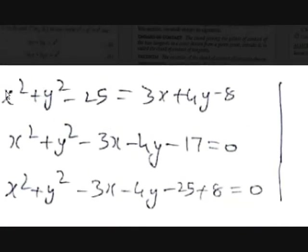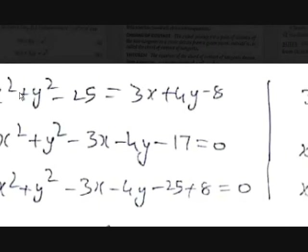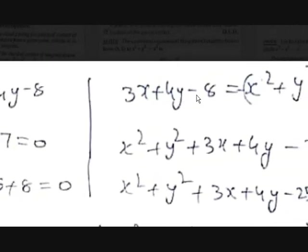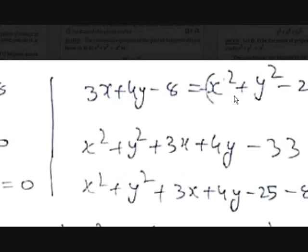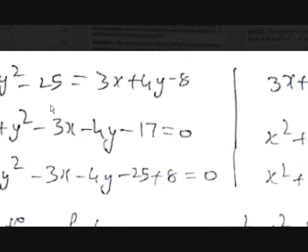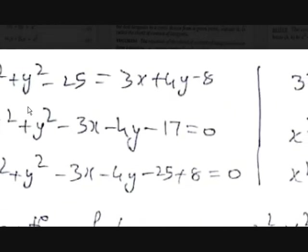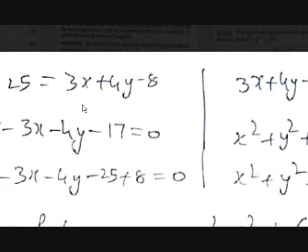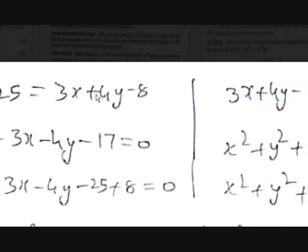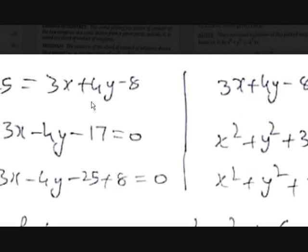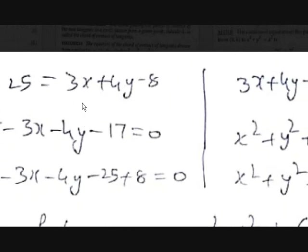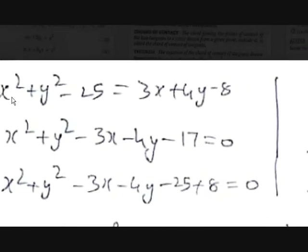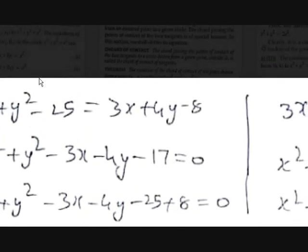Case 1: x²+y²−3x−4y−17=0. Case 2: x²+y²+3x+4y−33=0. These are the two equations of the locus of the moving point.